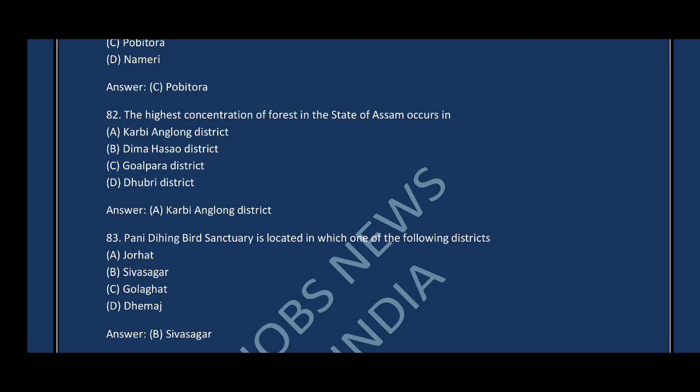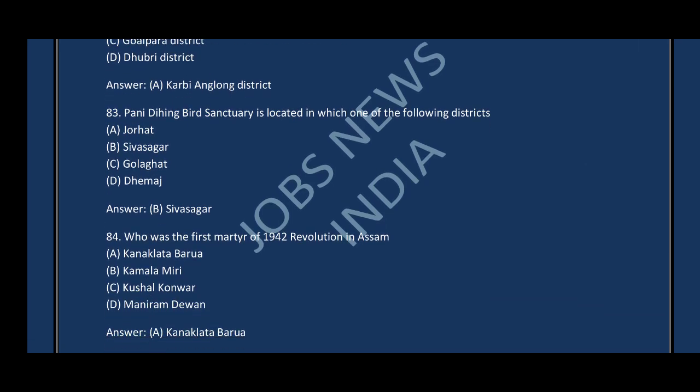Question number eighty-three: Pani-Dihing Bird Sanctuary is located in which district? Question number eighty-four: Who was the first martyr of the 1942 revolution in Assam? The correct answer is option A — Kanaklata Barua.